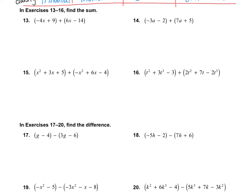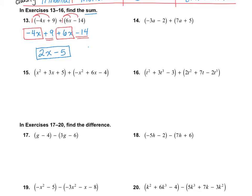On numbers 13 through 16, we need to find the sum, which means we're adding. For number 13, if we remove the parentheses, we multiply in an invisible one — but one times anything stays the same, so we just write it without parentheses. Then combine like terms: combine the x's and the plain numbers, making sure to write in standard form. Negative 4 and 6 is positive 2, and 9 minus 14 is negative 5, so the final answer is 2x minus 5.